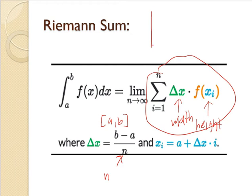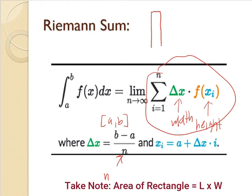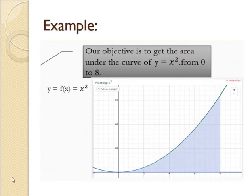So for example, if we have one rectangle under the curve, this portion is delta x. And this one, the height is f of x. We have an example here, we'll solve it.